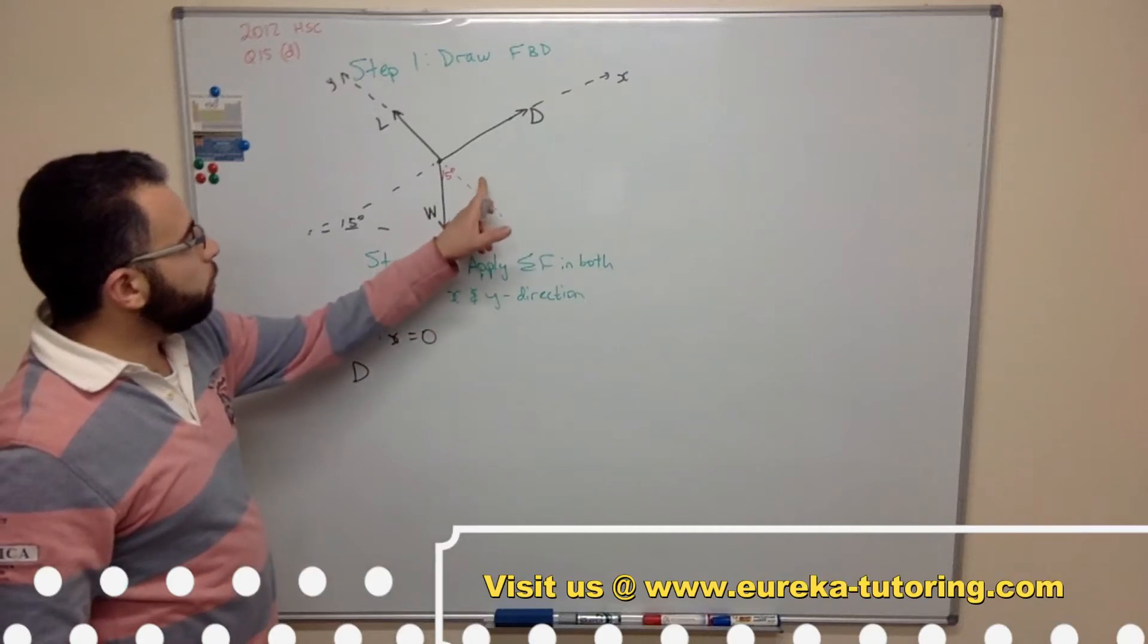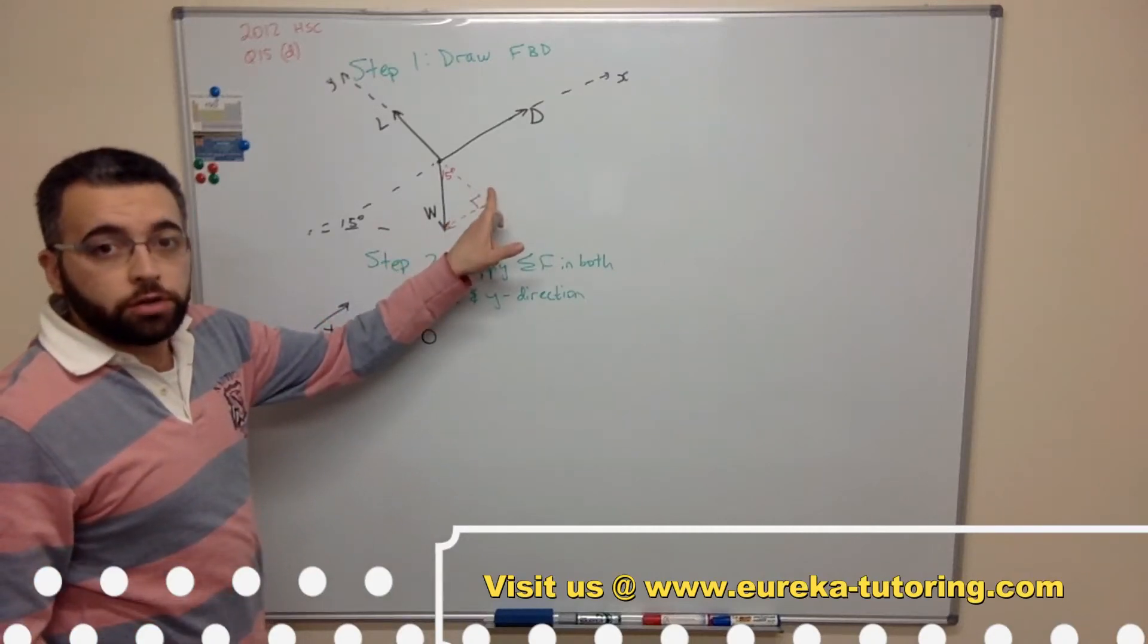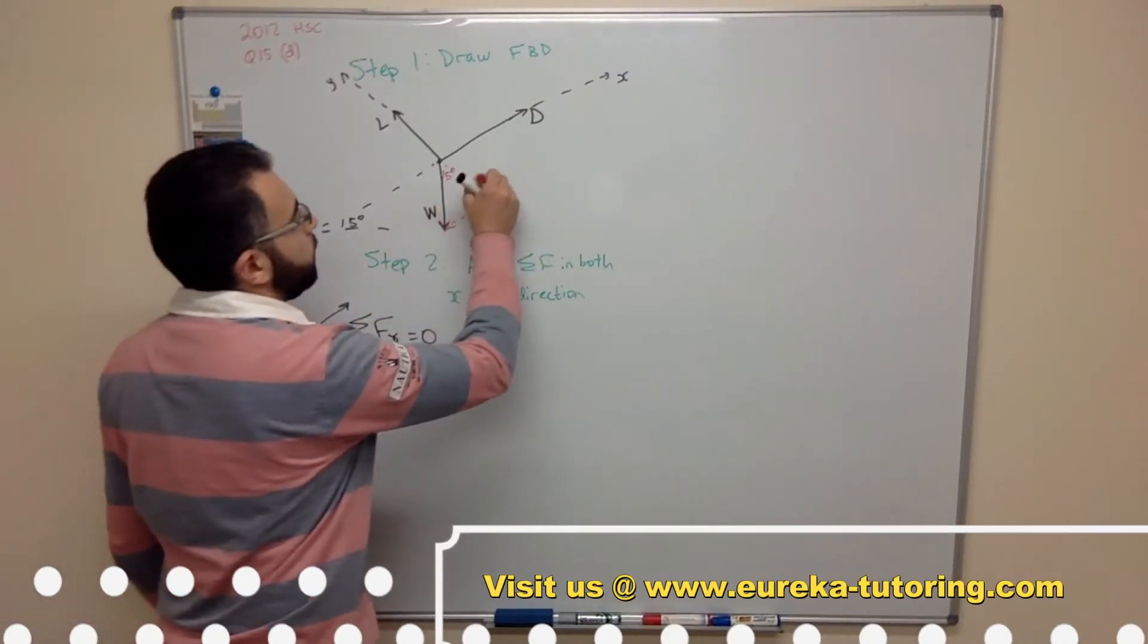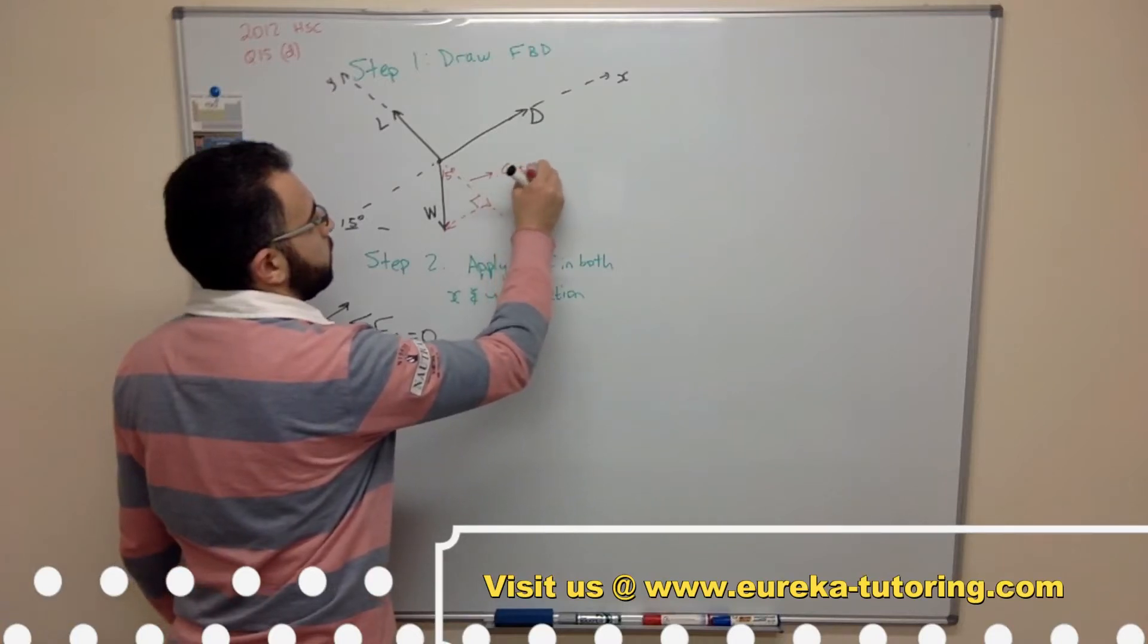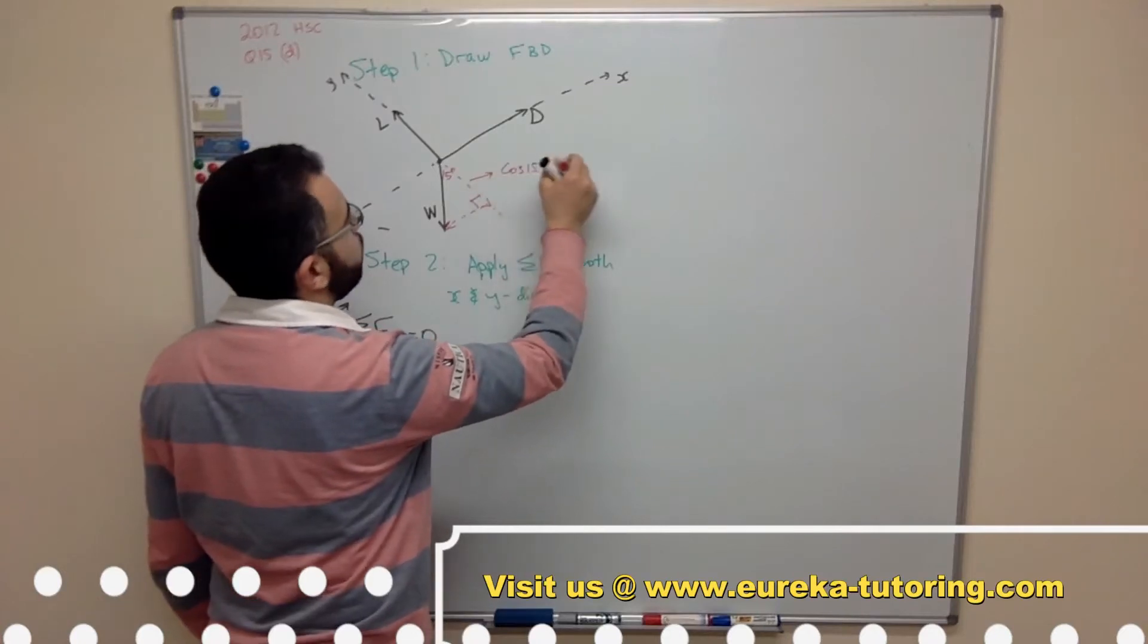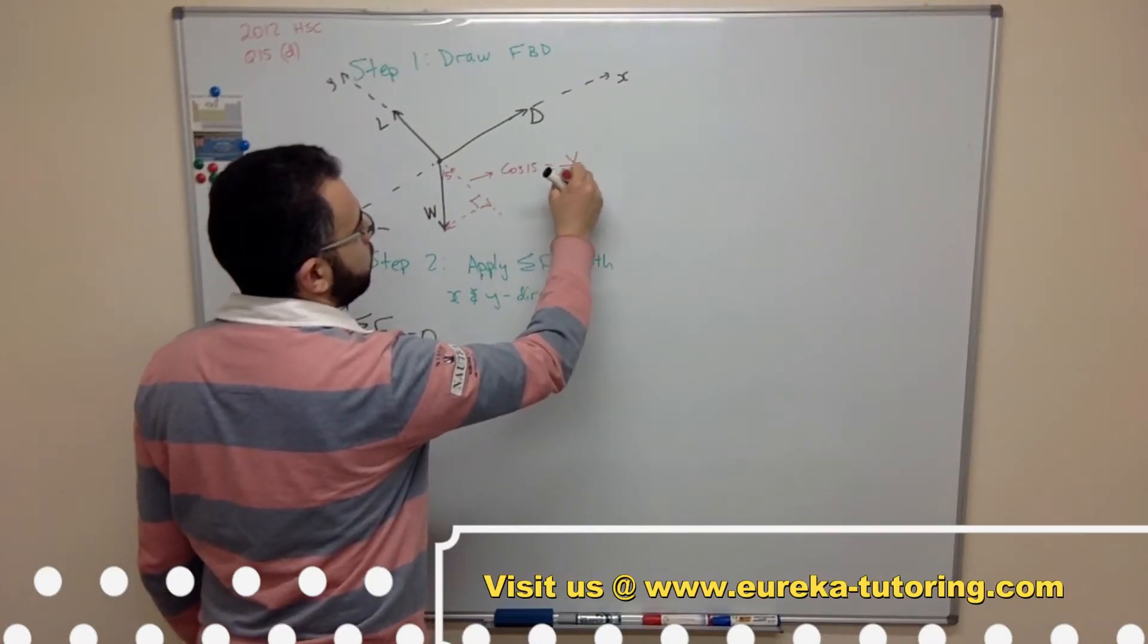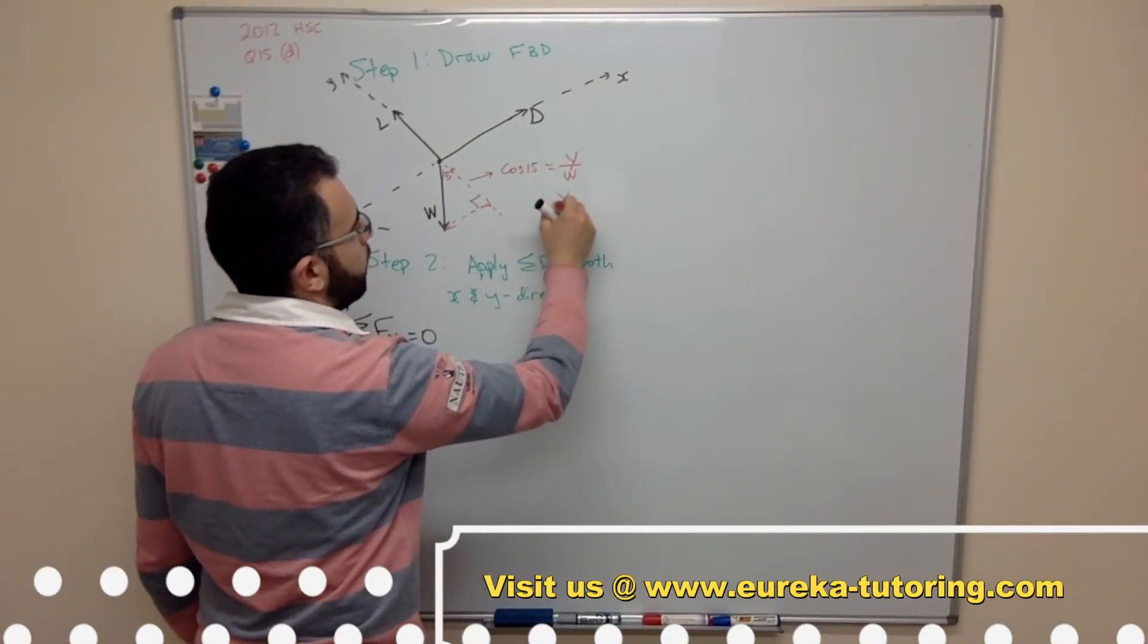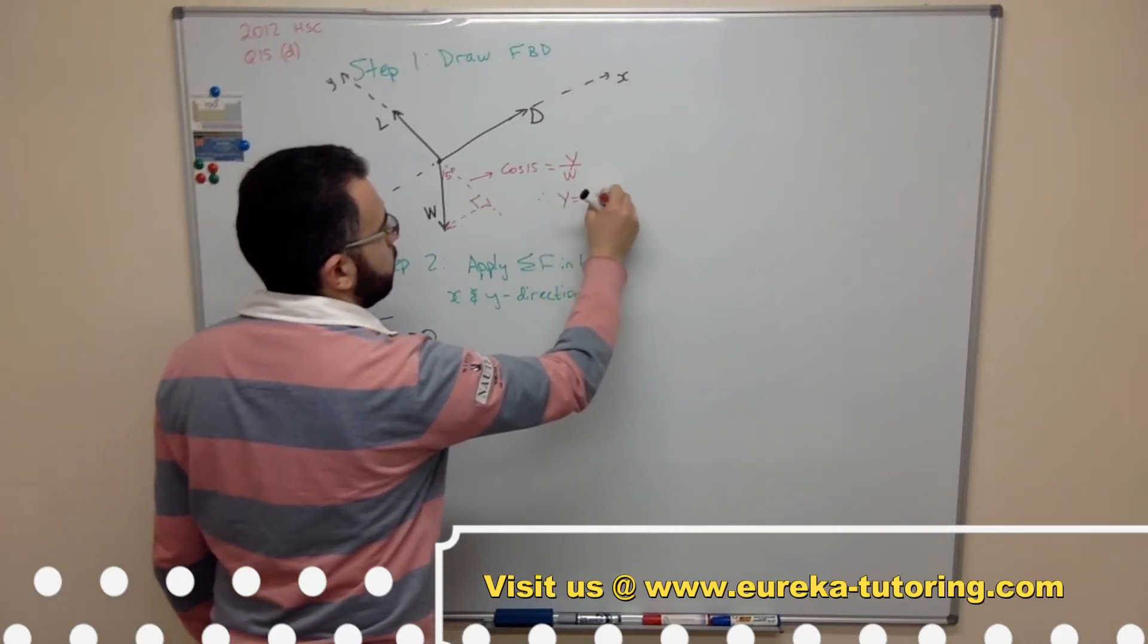Okay so to solve this we use the cosine ratio. So cos 15, cos 15 because it's adjacent on hypotenuse. So cos 15 equals we call that y on w. Therefore y equals w cos 15.